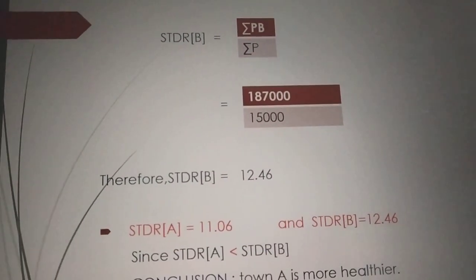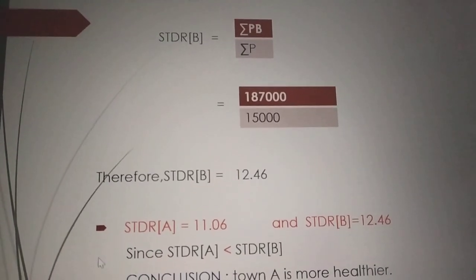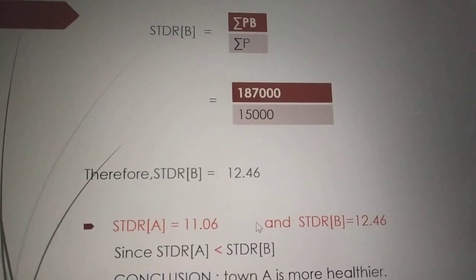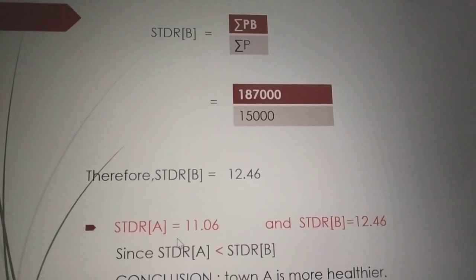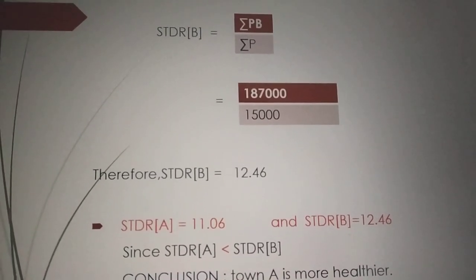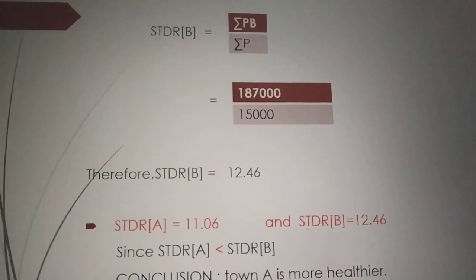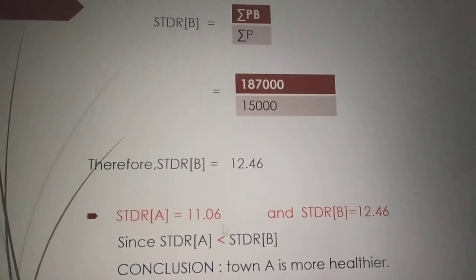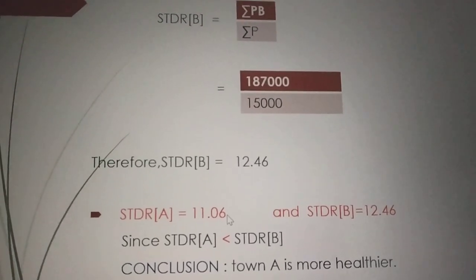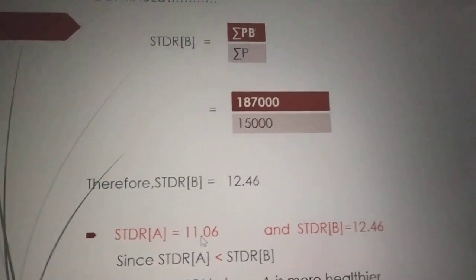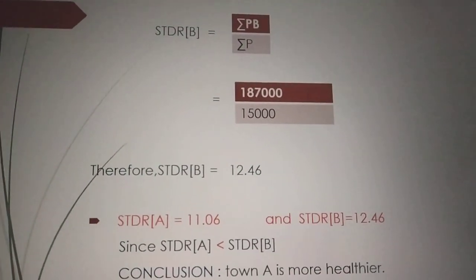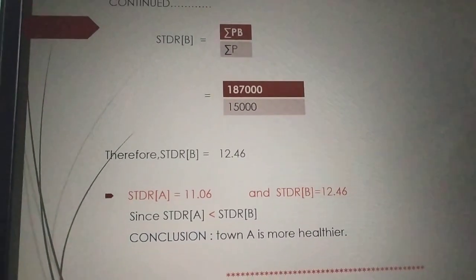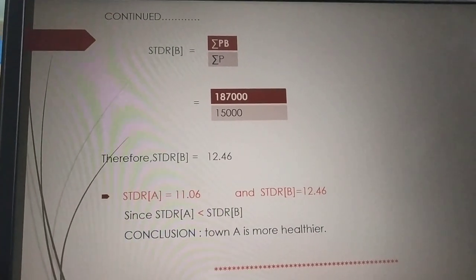Now write the conclusion. STDR of A is 11.06 and STDR of B is 12.46. The town with lesser death rate is considered more healthy. Since STDR of A is less than STDR of B — 11.06 is less than 12.46 — town A has the lesser death rate. Therefore, town A is more healthier. This is how we calculate type 1 problems using the formula.